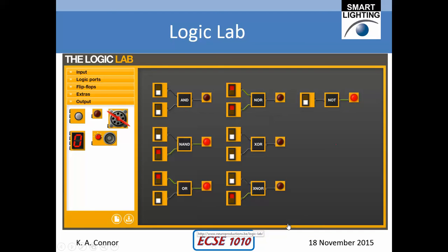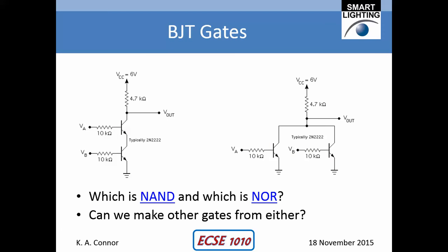Next, how do we make such gates? We make gates out of transistors. What's shown here is a very simple way of making either a NAND gate or a NOR gate using transistors. The question is: which one is the NAND gate and which one is the NOR gate?